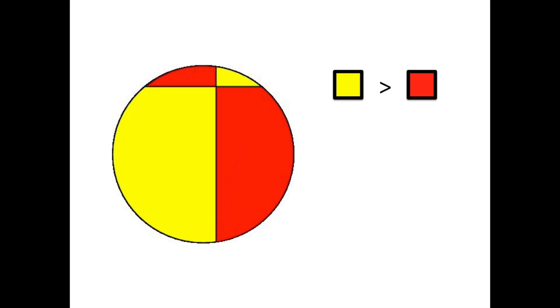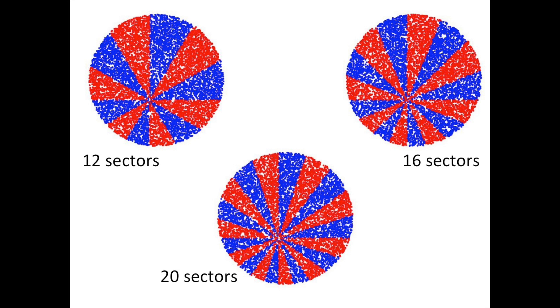However, the pizza theorem does work for more than eight slices of pizza. If there are 12, 16, 20, or any greater multiple of four slices, and the angles of each slice are the same, taking alternating slices still splits the pizza into two equal amounts.